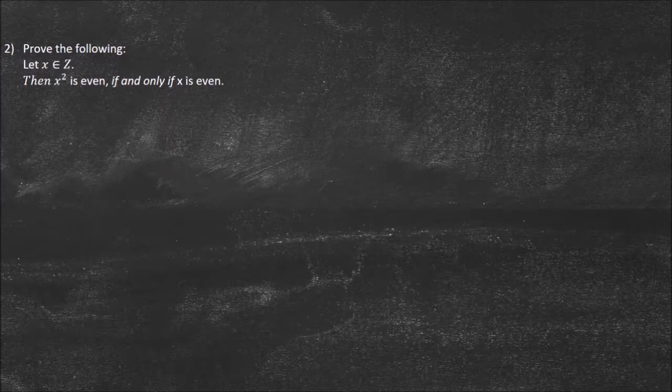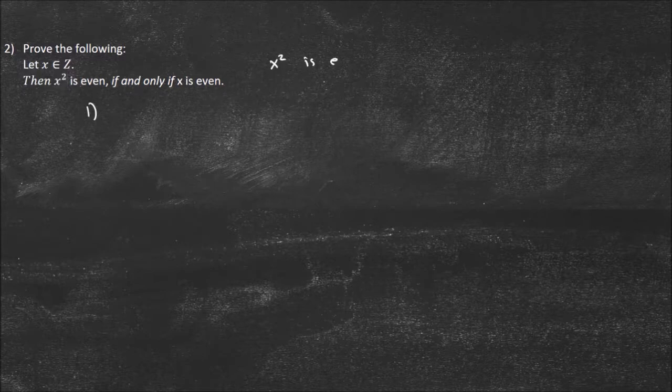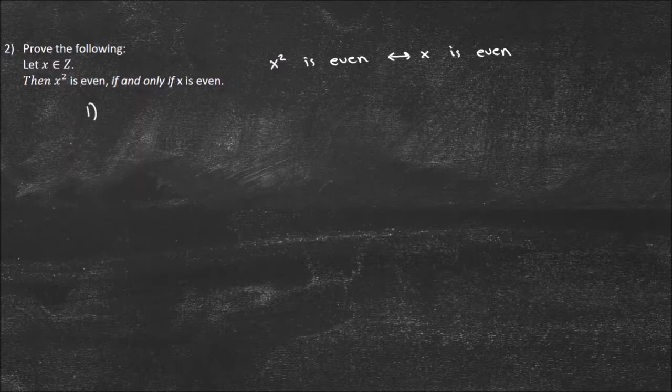Now let's look at another one. These are going to get a little harder, mainly because they're going to have two conditions — this proof goes both ways. We have to show that if X squared is even, then X must be even, and also that if X is even, then X squared must be even. So we have two conditionals here. Using logic notation, we'd write: X squared is even if and only if X is even. That means X is even implies X squared is even, and also X squared is even implies X is even.